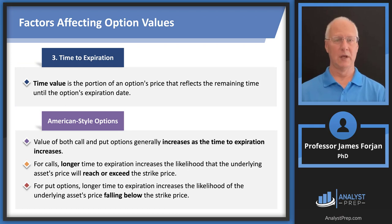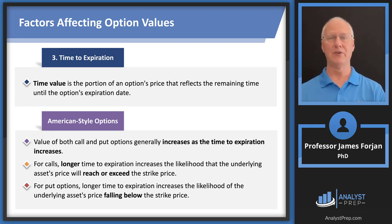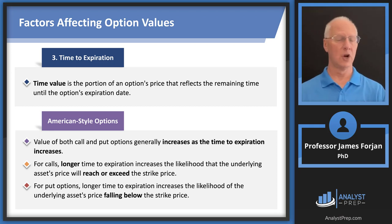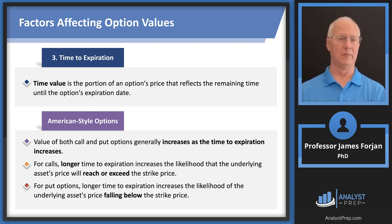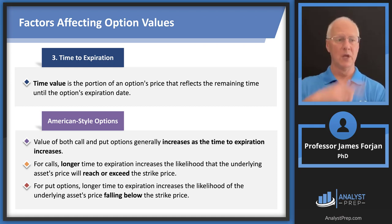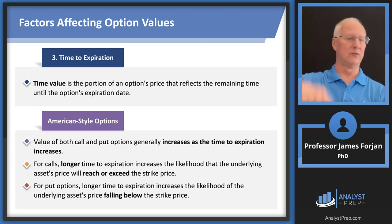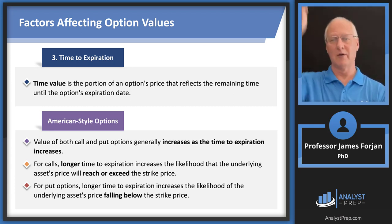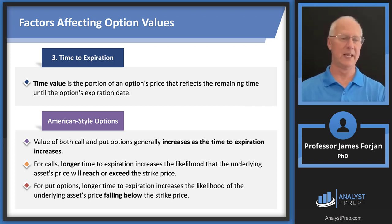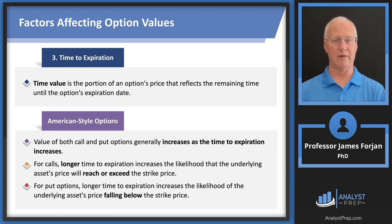Time to expiration: if you consider an option that expires in five days versus one that expires in 500 days, all other conditions being identical, you'd probably be willing to pay more for the 500-day option. Stock prices go up and down, and you have 500 days to get in the money versus only five days for the shorter one.